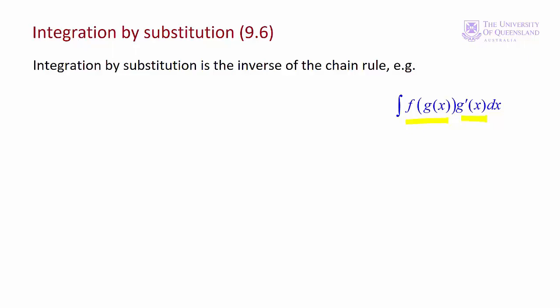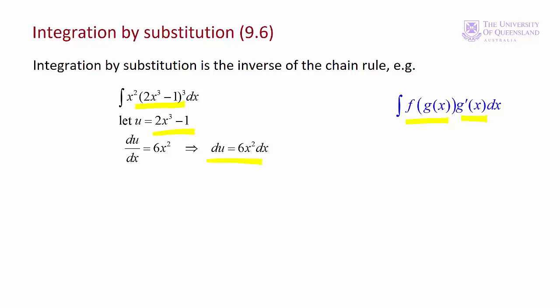We simplify the integrand by substituting another variable for the inner function of the composite function. Going back to our function, first we need to identify the compound function and the inner function. The inner function is 2x cubed minus 1; we let that equal u. Since we'll be integrating with respect to u, we need to replace dx with du. If we take the derivative of that inner function, we find that du/dx is equal to 6x squared. In this example we have x squared rather than 6x squared — let's see how we take care of that.